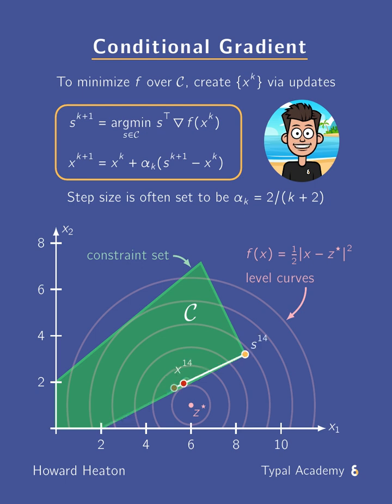Notice the sequence x^k converges to the point in the constraint set C that is closest to z*, as desired. Also note the oscillatory behavior of this sequence, which can be reduced using variations of this scheme.